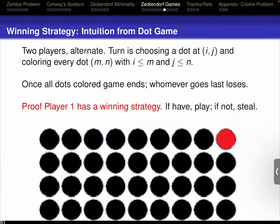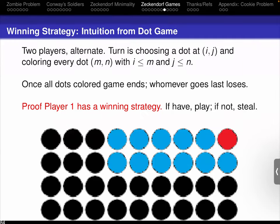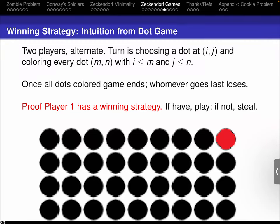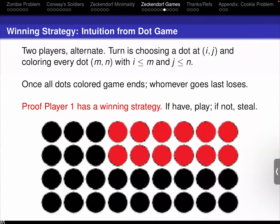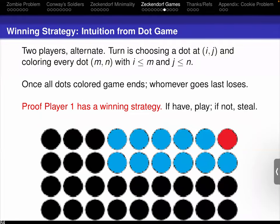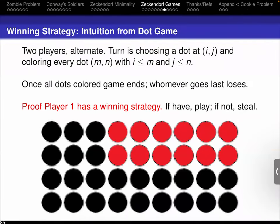If player two has the winning strategy, they can steal it as follows. Assume player two has the winning strategy for this board, and player one goes in the upper right corner. Player two's winning strategy requires some move from this point — let's say it was going in the blue dot in the lower left corner. Player one then says: 'Wait, I didn't mean to do that move. What I want to do is go where you went.' Because we were assuming player two had the winning strategy, and from this configuration player two is going to win. So player one can switch the parity and steal the strategy.